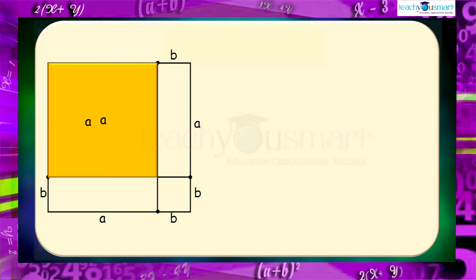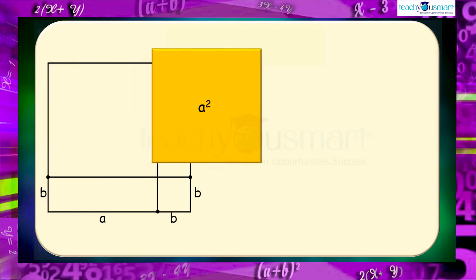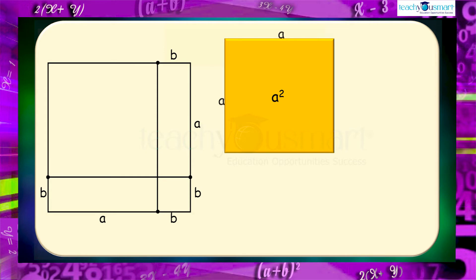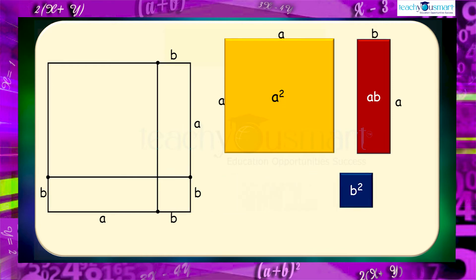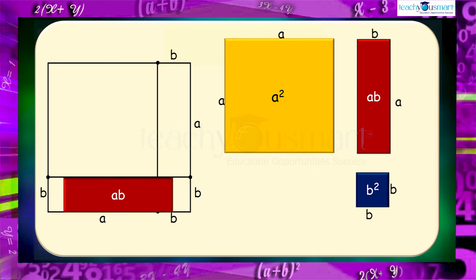The first part of the square has an area a². The next part has ab. Next part b², next part ab.